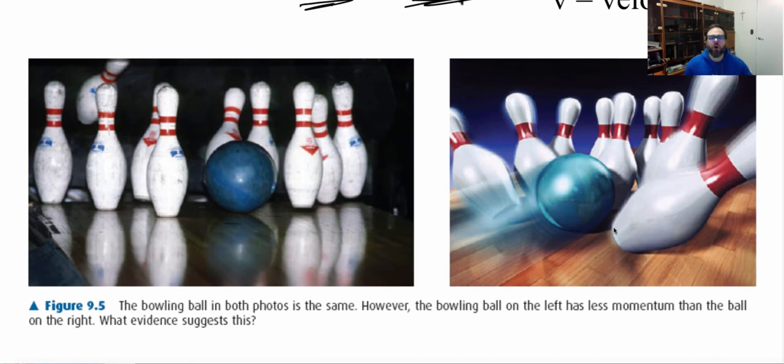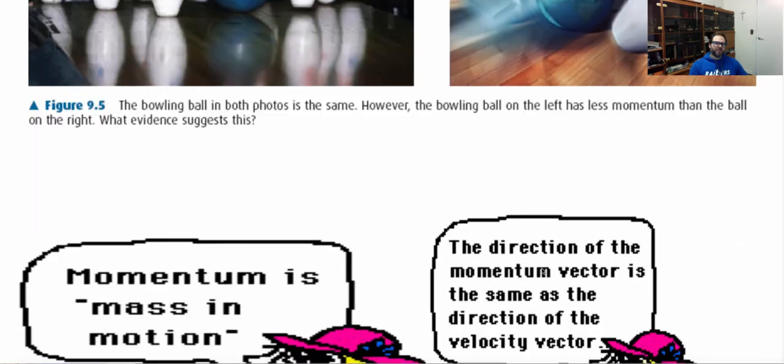What evidence suggests that the bowling ball on the left has less momentum than the right? If you guessed the velocity, you are correct. The bowling ball on the left has way less velocity than the bowling ball on the right.